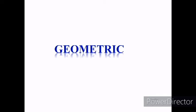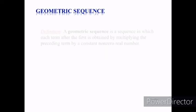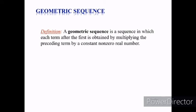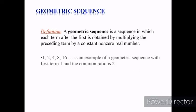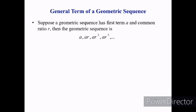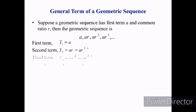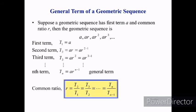Now, we will look at geometric sequences and series. A geometric sequence is one in which each term after the first is obtained by multiplying the preceding term by a constant non-zero real number. For example, 1, 2, 4, 8, 16, and so on is a geometric sequence with first term 1 and common ratio 2. Suppose a geometric sequence has first term a and common ratio r; the sequence is a, ar, ar², ar³, and so on. The nth term becomes ar^(n−1). Therefore, the common ratio r equals t(2)/t(1), or more generally t(n)/t(n−1).